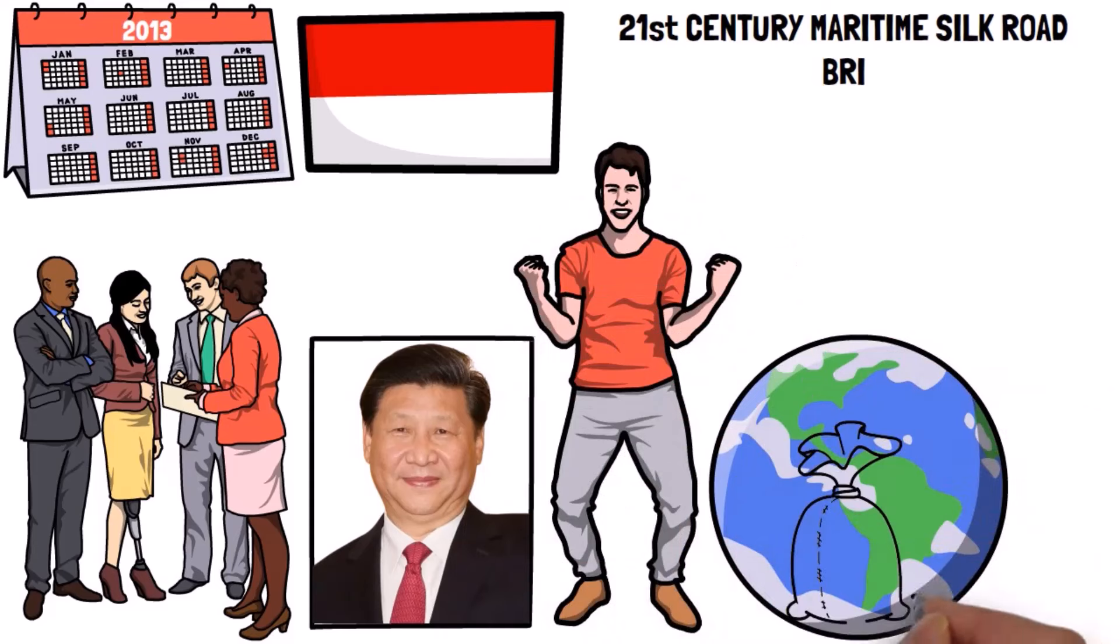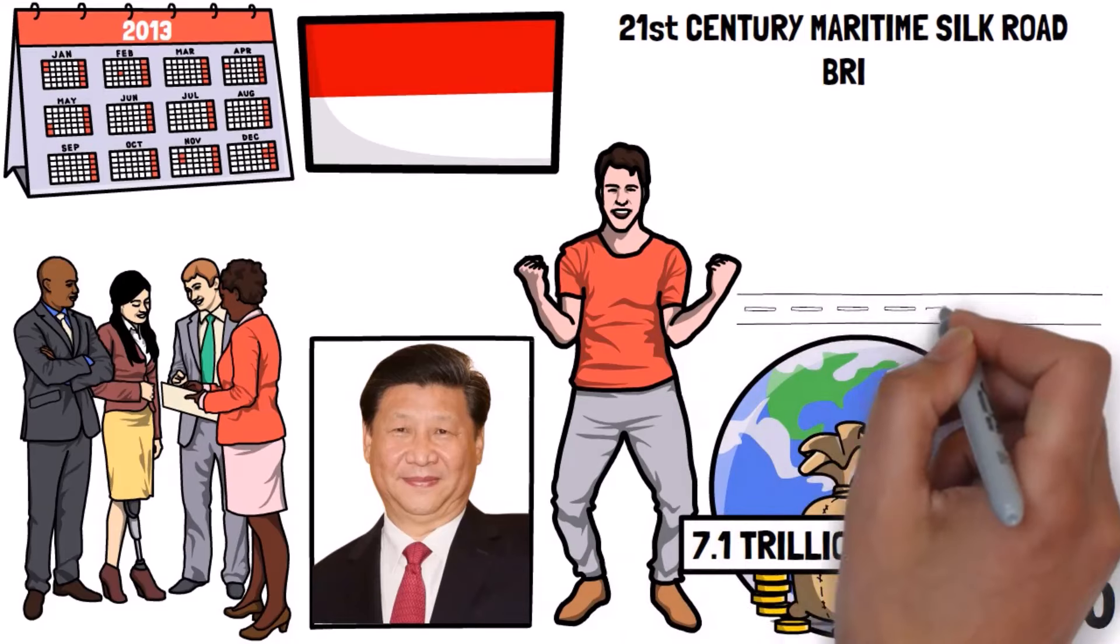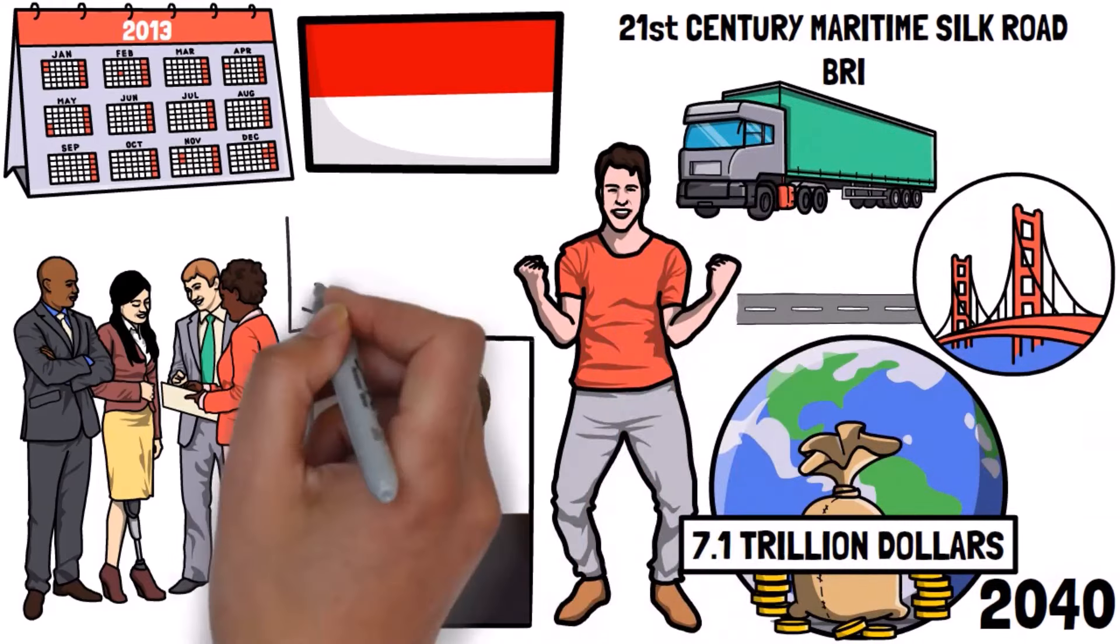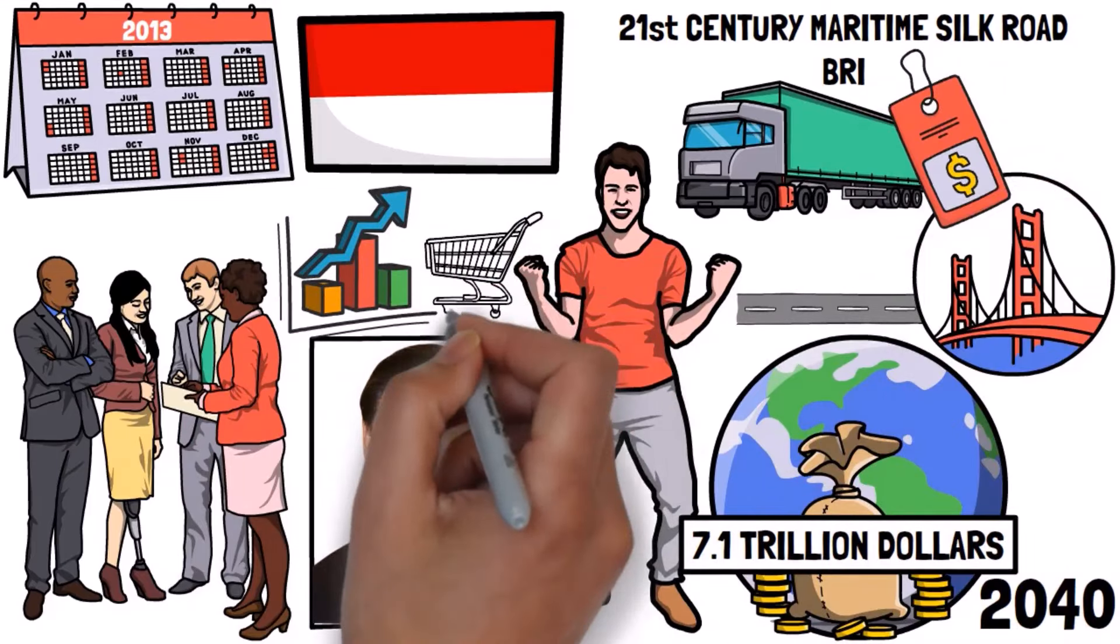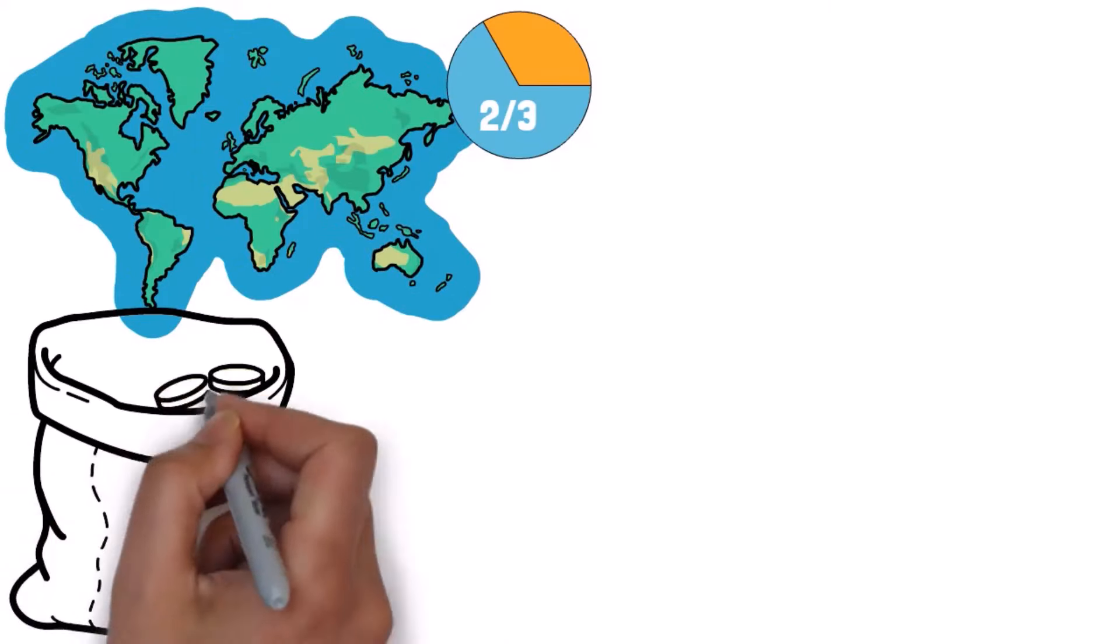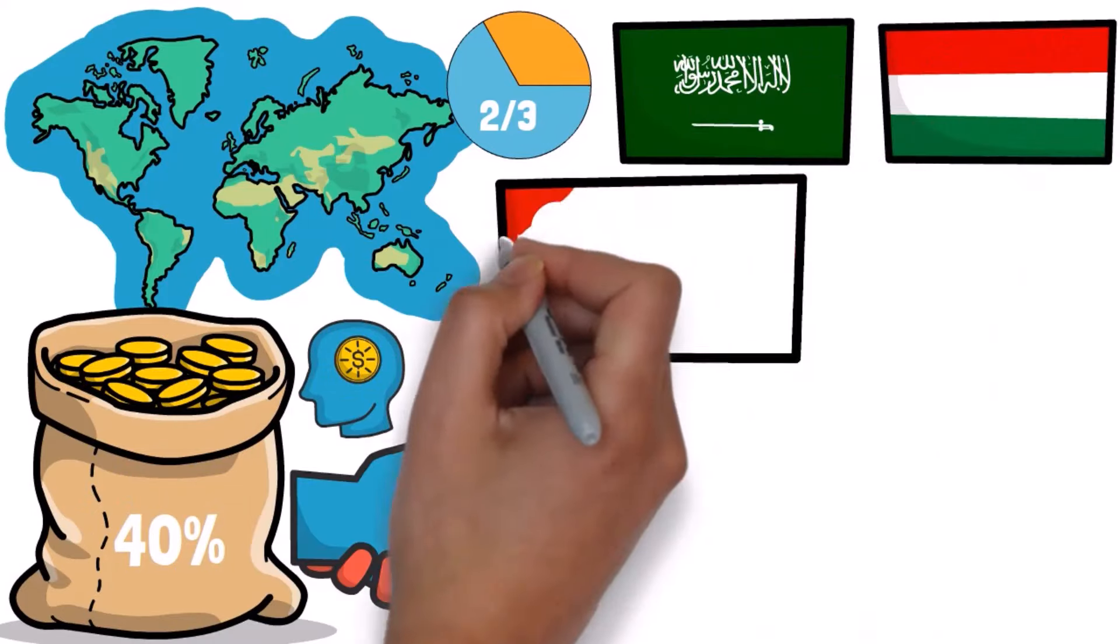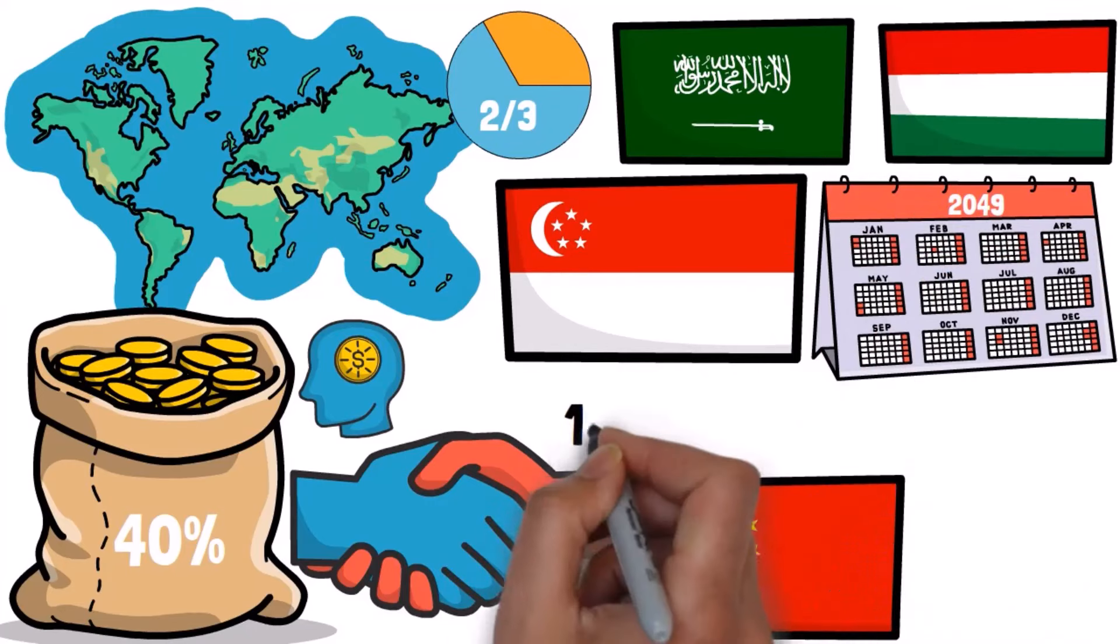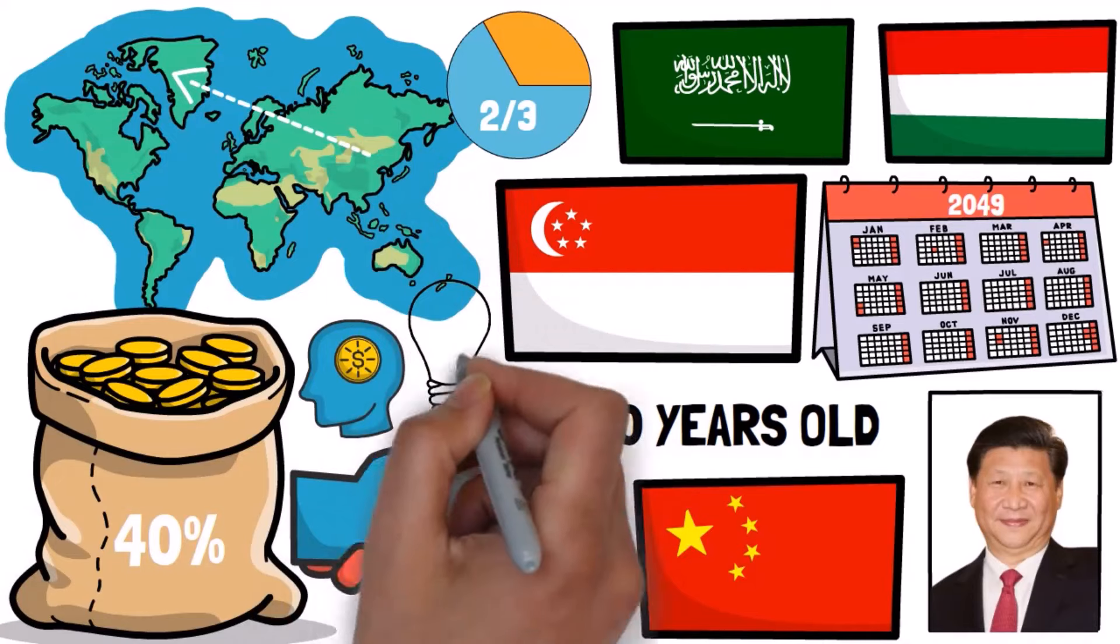The Belt and Road Initiative was a big project that could make the world economy much better, like $7.1 trillion better by the year 2040. It did this by making things like roads and bridges better. This made it easier for countries to trade with each other. It was a win-win because developing countries got better infrastructure and ways to trade, and developed countries got to sell their things to new markets and buy cheaper stuff. More than 150 countries, which is like two-thirds of the world's people and 40% of the world's money, said they wanted to join in on these projects. Some countries like Saudi Arabia, Hungary, and Singapore got a lot out of it. They wanted to finish all this work by the year 2049, which is also when China's People's Republic will be 100 years old. Xi Jinping said it's all about connecting places and making a brighter future.